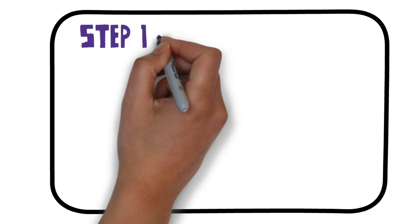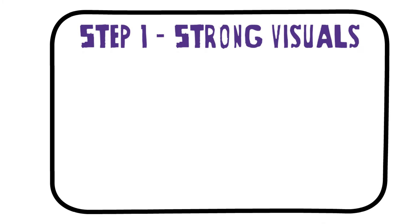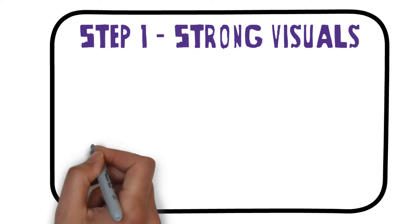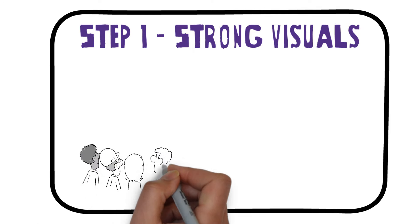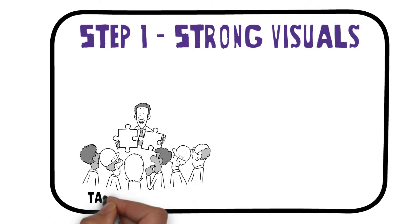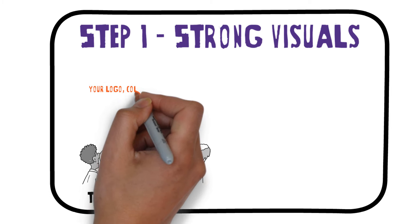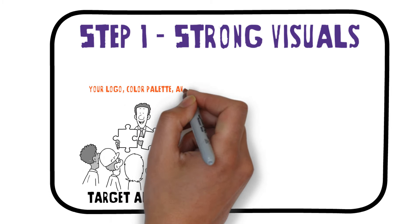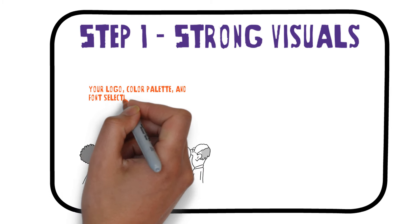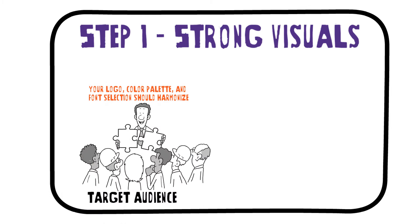Step 1: strong visuals. The first step in establishing your brand identity is creating strong visuals that resonate with your target audience. Your logo, color palette, and font selection should harmonize and reflect the personality and values of your brand.